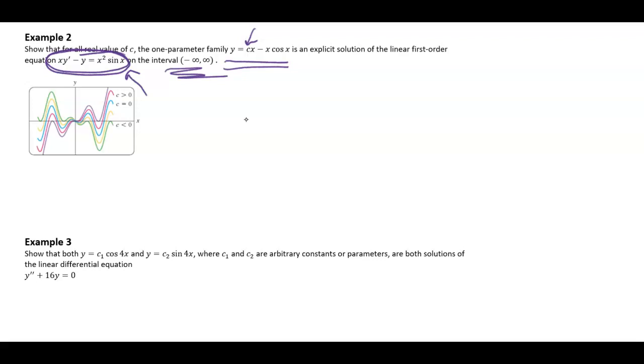I'm going to need to figure out what y prime is to plug in. What makes this one a little bit nicer is it is already written in y equals form, so I don't have to worry about doing implicit differentiation. I'm just going to take the derivative with respect to x. So the derivative of cx would be c minus, and then I need to use product rule here. So derivative of the first times the second plus the first times the derivative of the second. Let's clean this up just a little bit.